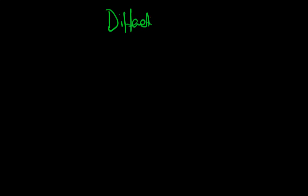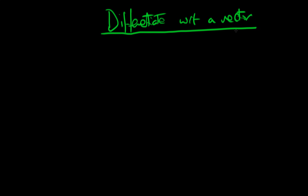Hi there. In this video I want to define what it means to differentiate with respect to a vector. We're quite capable of differentiating with respect to a scalar, but we haven't defined what we mean by differentiating with respect to a vector. I'm introducing this concept now because when we write down our econometric equation in matrix form, in order to derive our least squares estimates of beta — which is a vector — we have to differentiate some sort of sum of squares with respect to a vector.